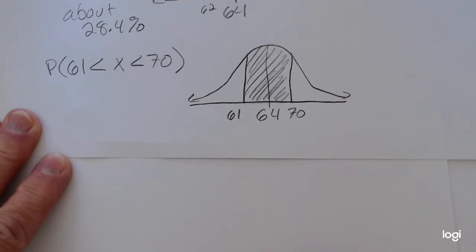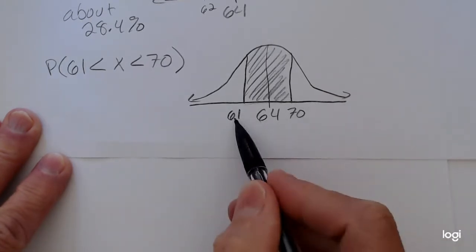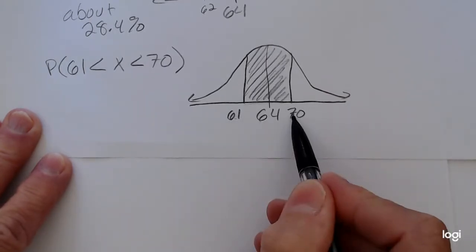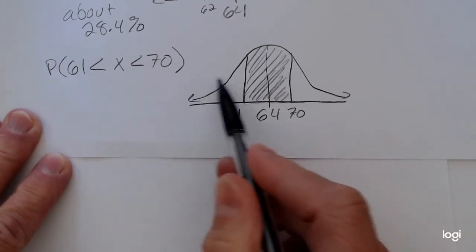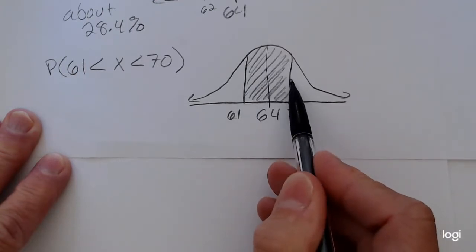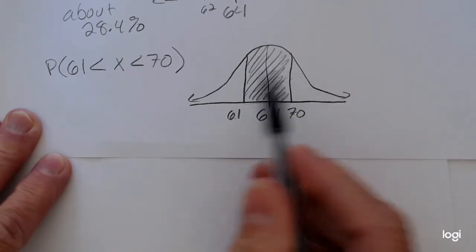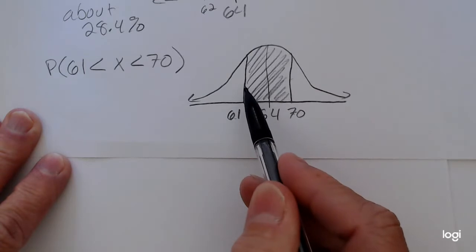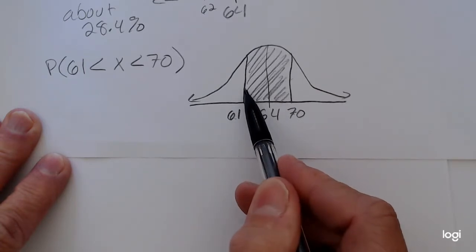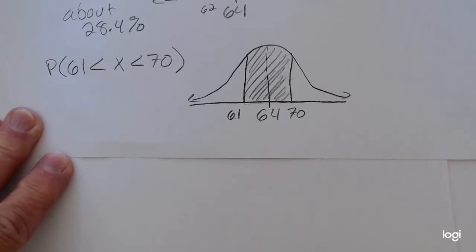If you're going to use your z-table for this, you would have to standardize both endpoints of this interval. And then you would have to use the table twice. You'd have to find the larger area up to the positive z-score and subtract out the smaller area up to the lower z-score. If you use the calculator, it's less work.